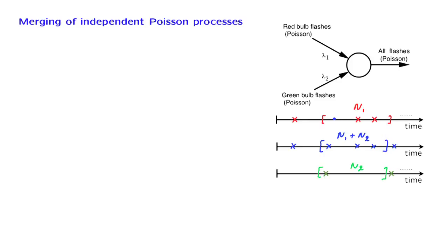Now, n1 is a Poisson random variable because this is a Poisson process. Similarly, n2 is a Poisson random variable. We assume that these two processes are independent. Therefore, n1 plus n2 is the sum of independent Poisson random variables, and therefore n1 plus n2 is also a Poisson random variable. This is reassuring — it's good evidence that the merged process is a Poisson process.